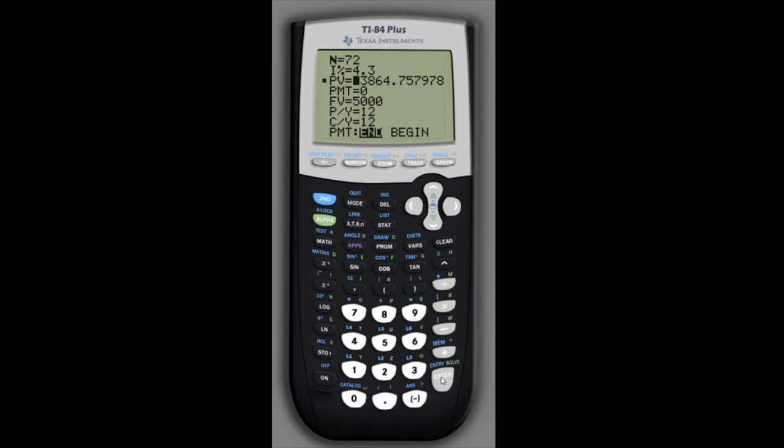And the present value comes out to $3,864 and 76 cents when we round it. Notice that that's negative. The TVM solver treats payments going out as negative and payments coming in as positive. And since we wrote the future value as a positive value, this is as if we are depositing something today and receiving back a future value in six years.